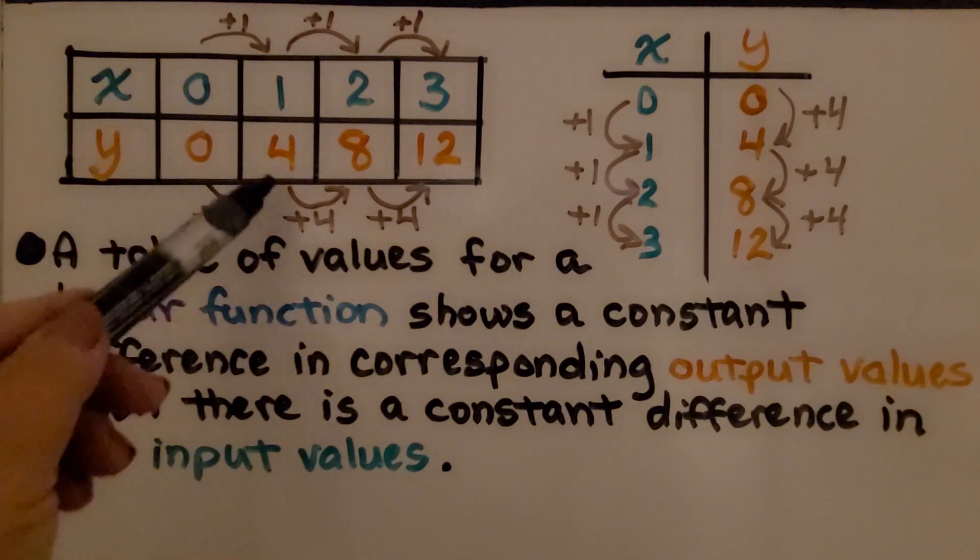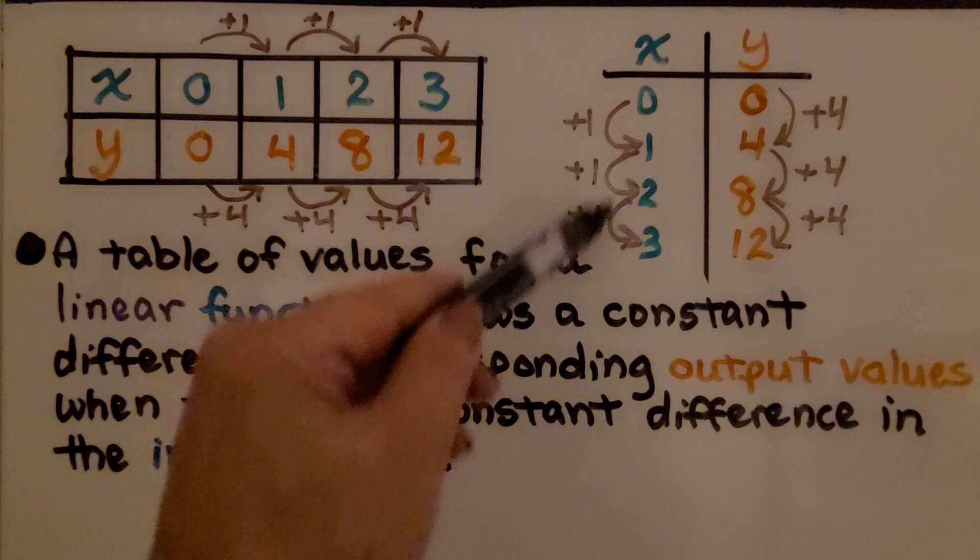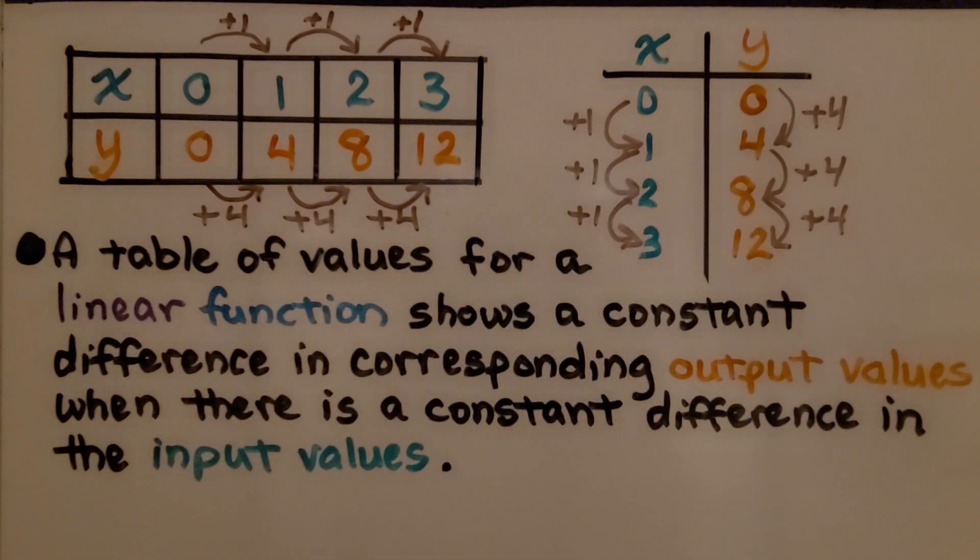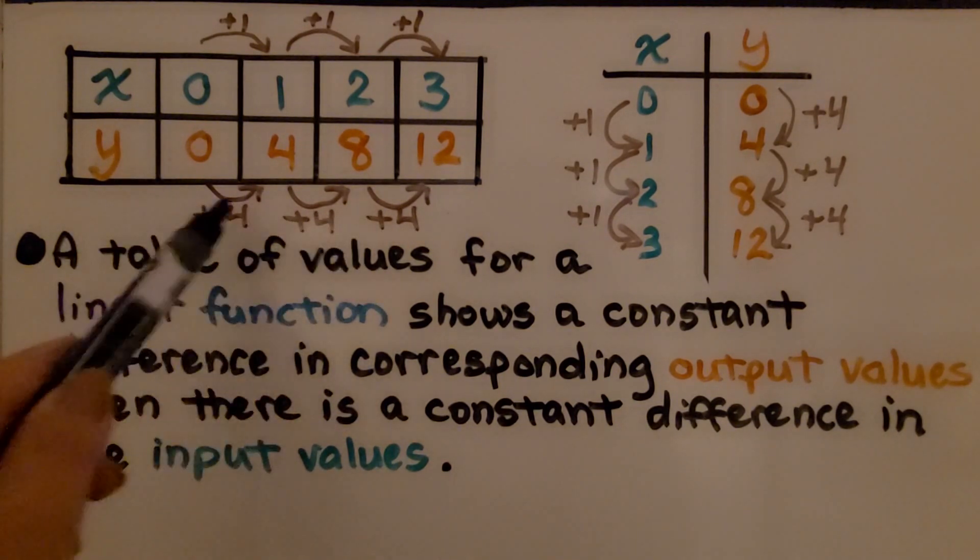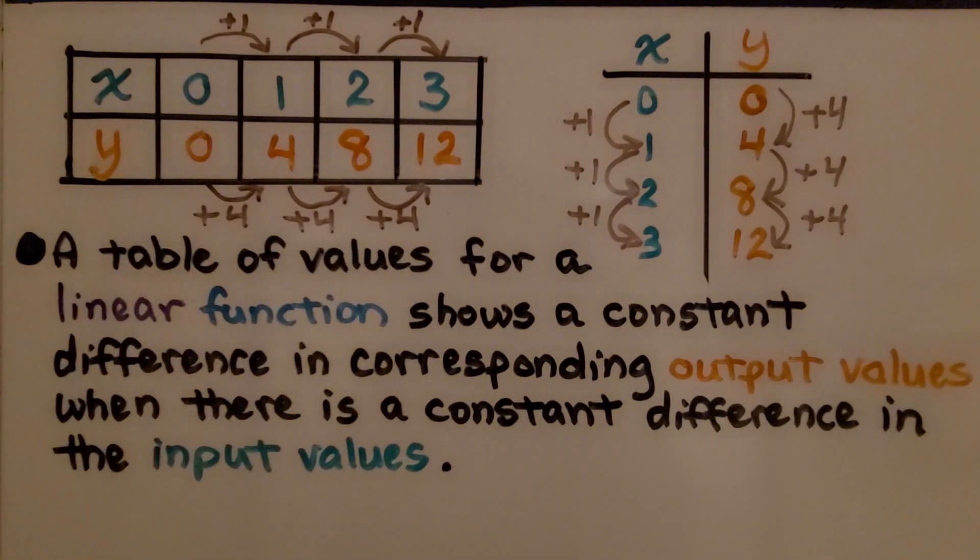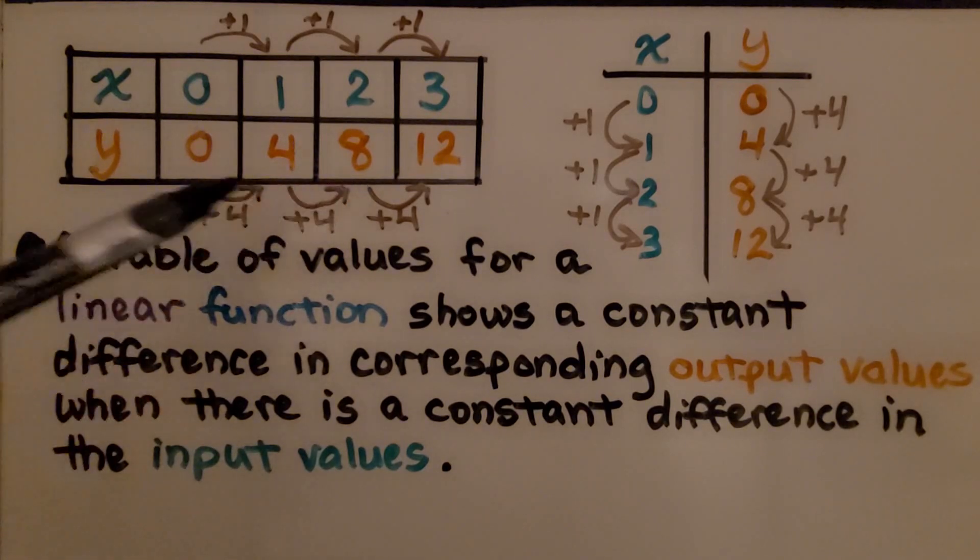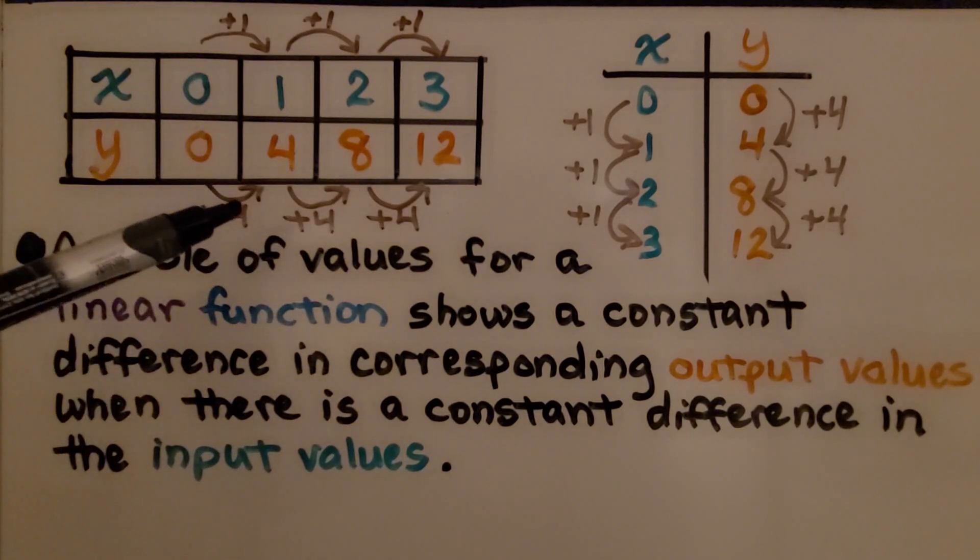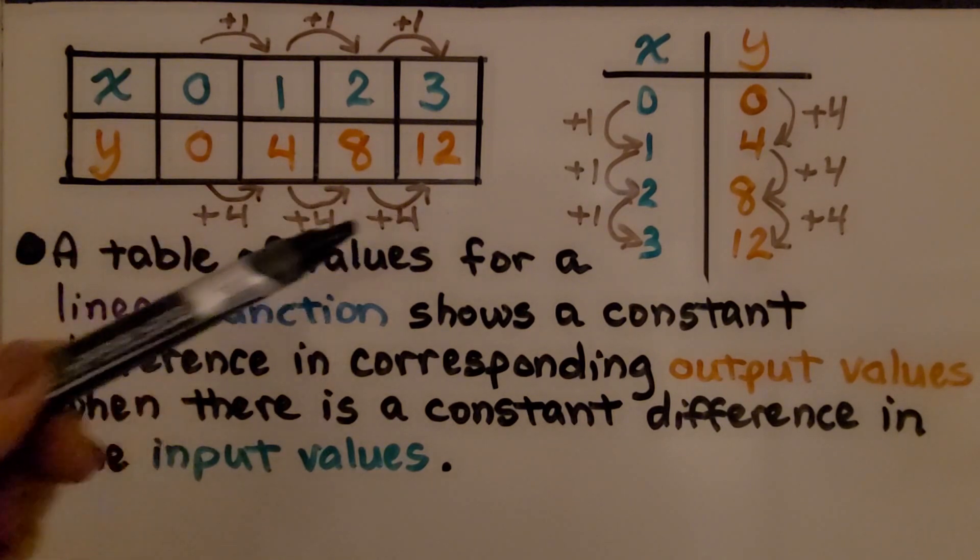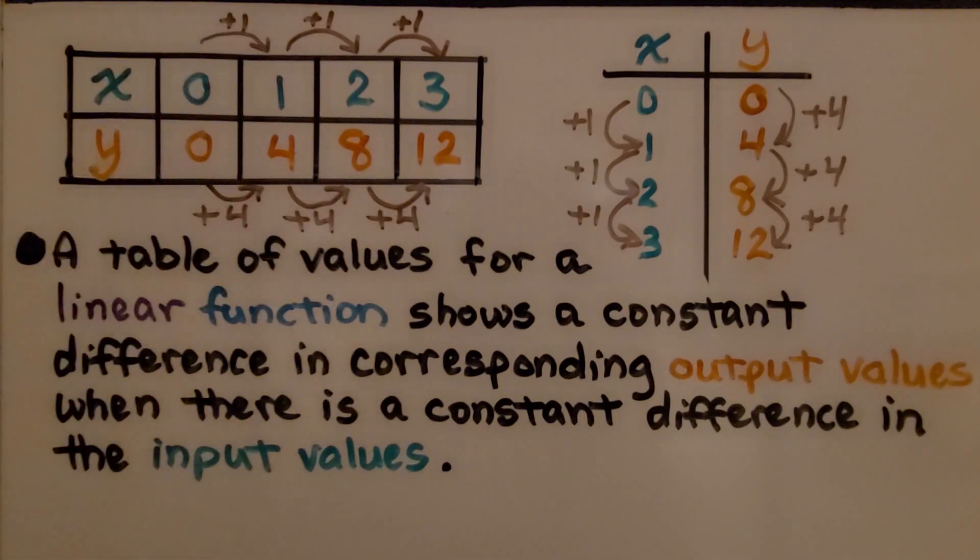The y values are going plus 4, plus 4, plus 4. Same for the vertical one. A table of values for a linear function shows a constant difference in corresponding output values when there is a constant difference in the input values. These are all plus 4 and these are all plus 1, so that is a linear function.